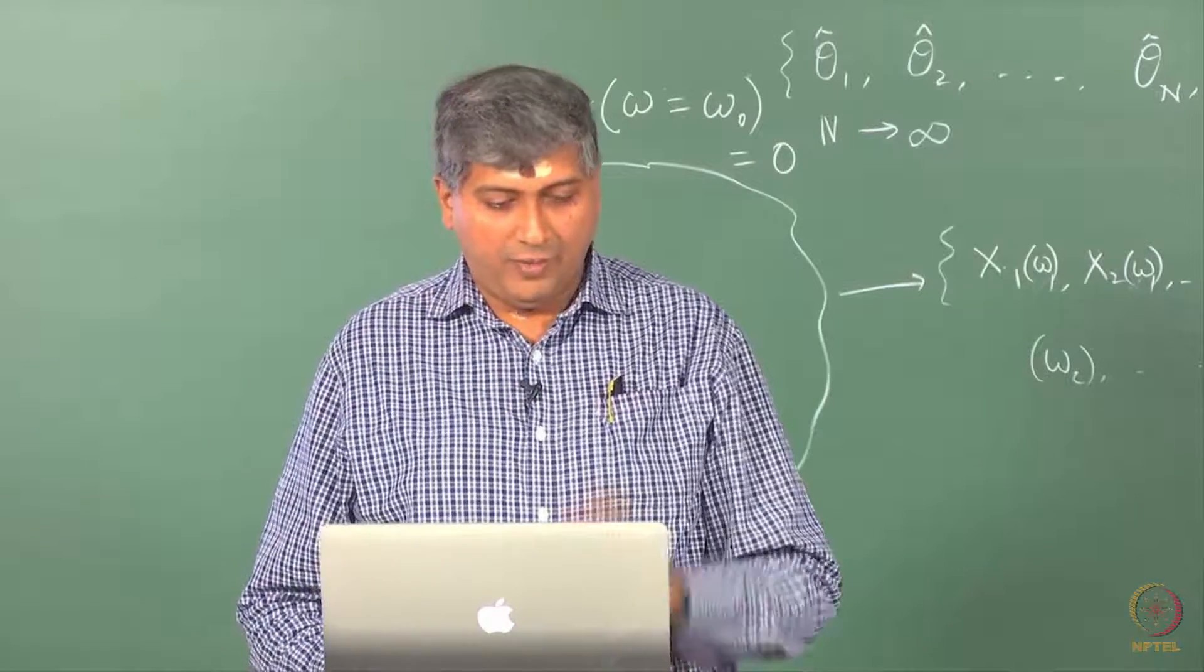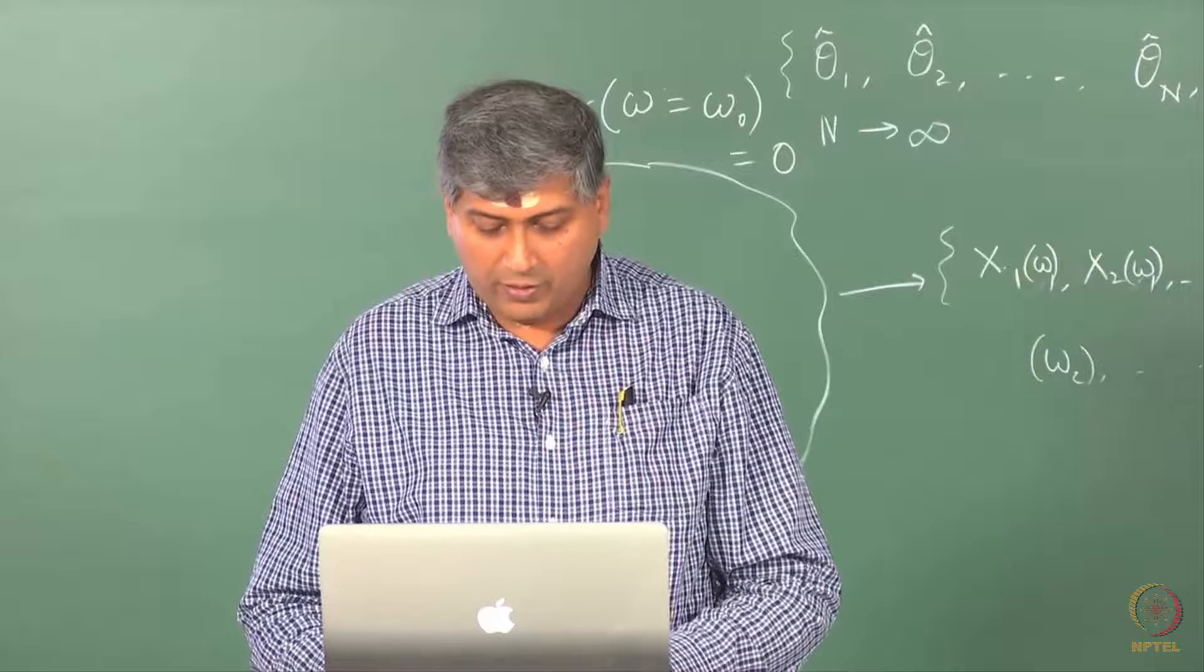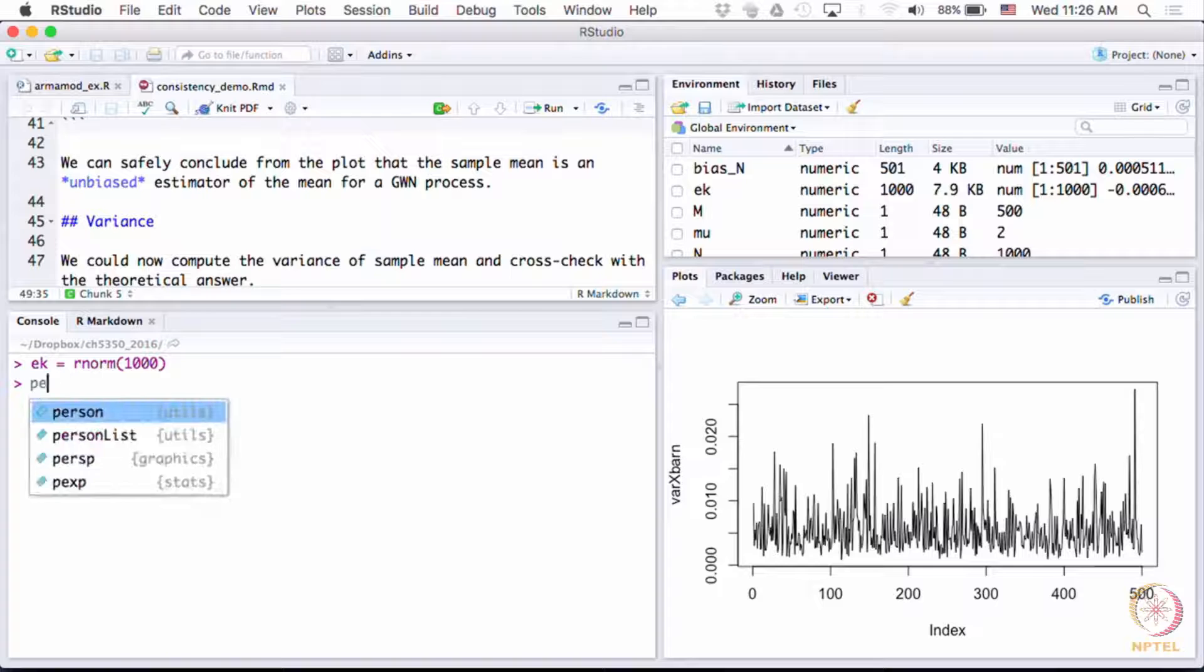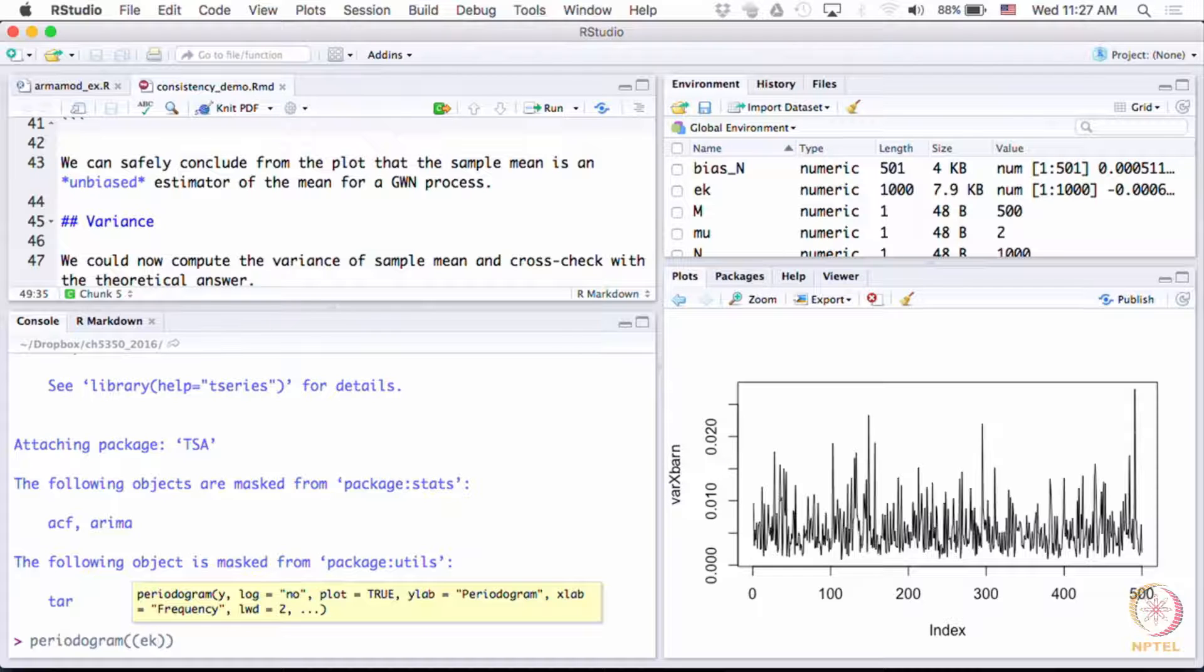So let me just illustrate. We will of course see this later on. Let us take the white noise process. Let us generate, for example, 1000 observations of a Gaussian white noise process, standard Gaussian white noise. Let us plot the periodogram of this finite length realization.